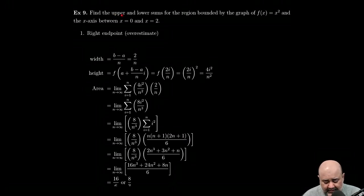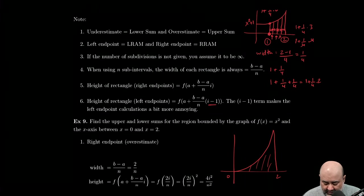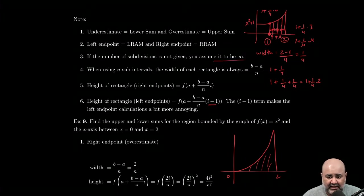That being said, if you're careful with notation, it shouldn't be an issue. Here we're asked to find an upper and lower sum, so overestimate and an underestimate for the region bounded by the graph of y equals x squared, the x-axis between x equals 0 and 2. Notice that we're not given the number of subdivisions, so we assume it to be an infinite number.